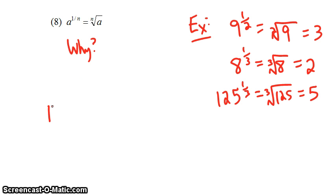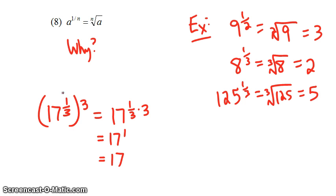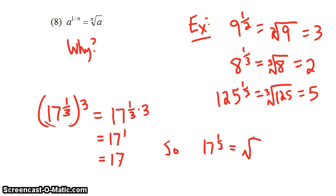Why should this rule work? Suppose we don't know what 17 to the 1 third power means. If we take 17 to the 1 third and raise it to the third power, according to rule 2, this should equal 17 to the 1 third times 3, which is 17 to the 1, which is 17. So this number, when cubed, equals 17 — meaning it should be the cube root of 17. So 17 to the 1 third power should equal the cube root of 17.